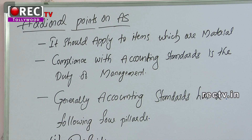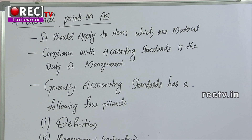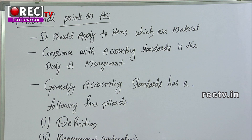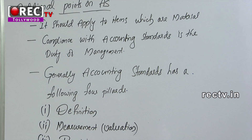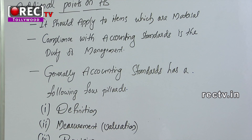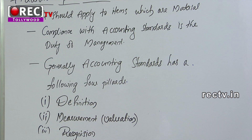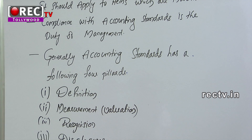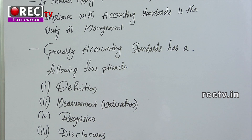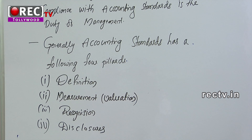Generally, an accounting standard has four pillars: number one — definition; number two — measurement or valuation; number three — recognition; and number four — disclosures.